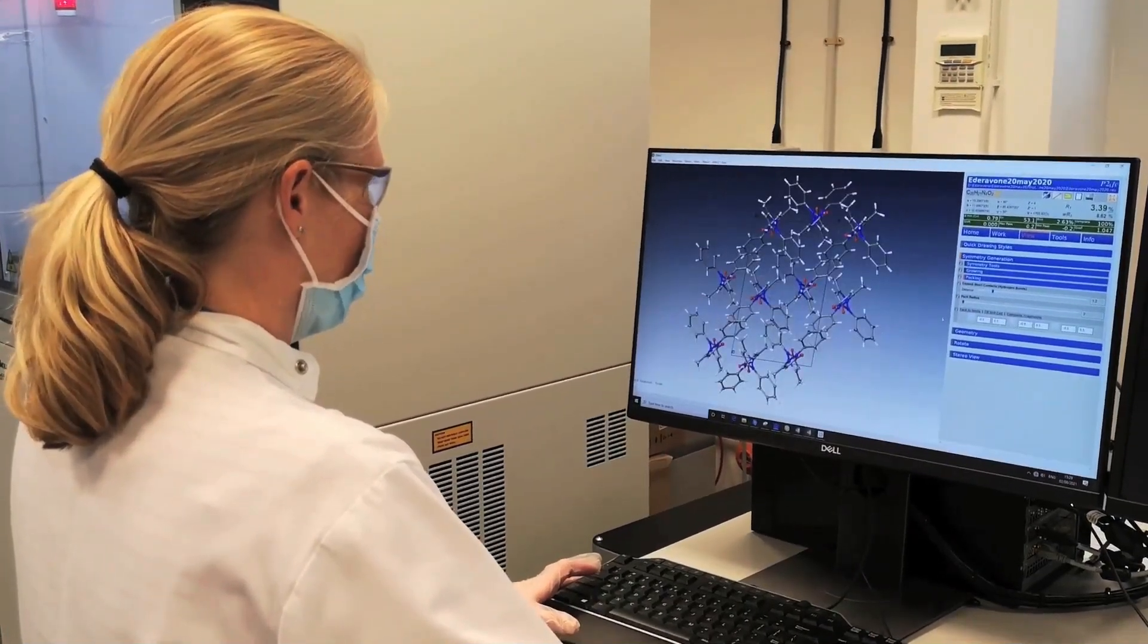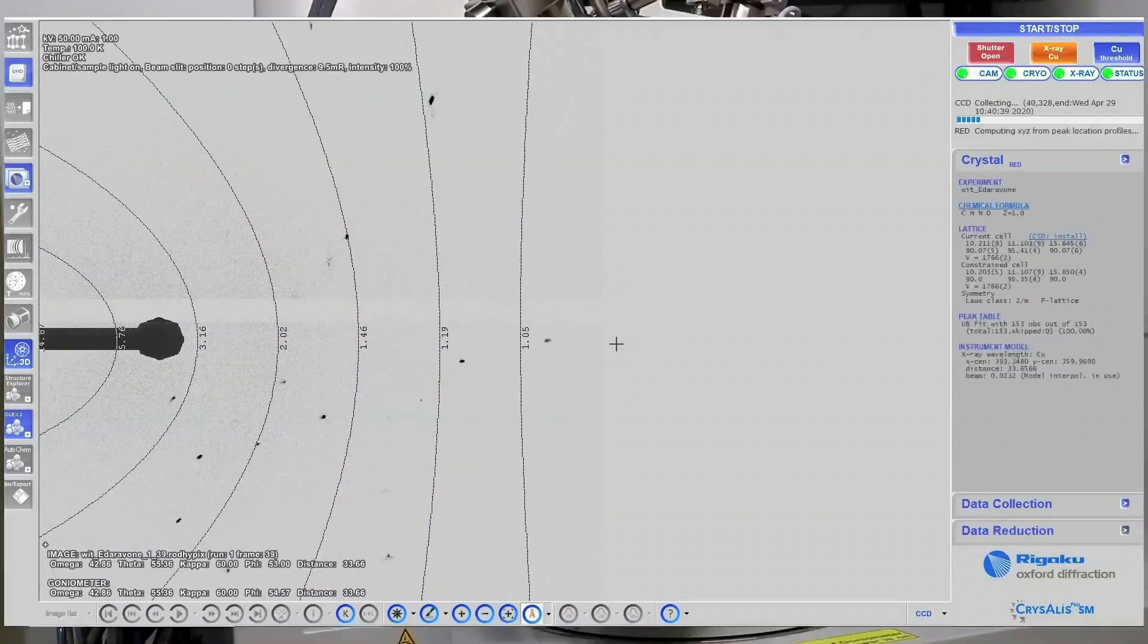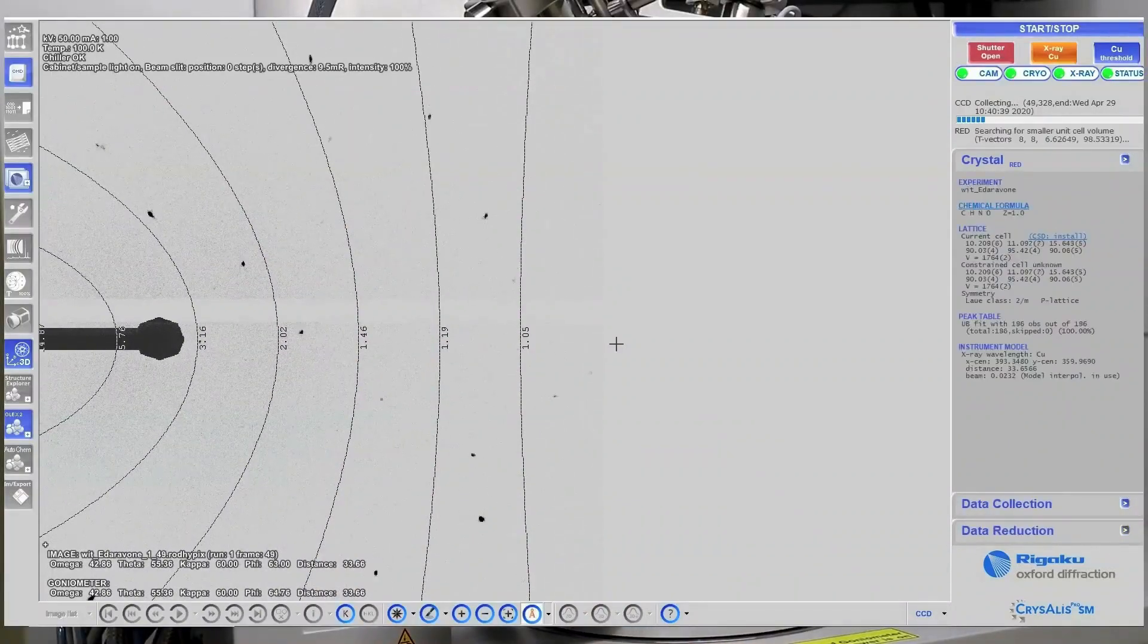Having these tools in-house means we can quickly identify new forms and confirm new molecular entities, for example salts and co-crystals.